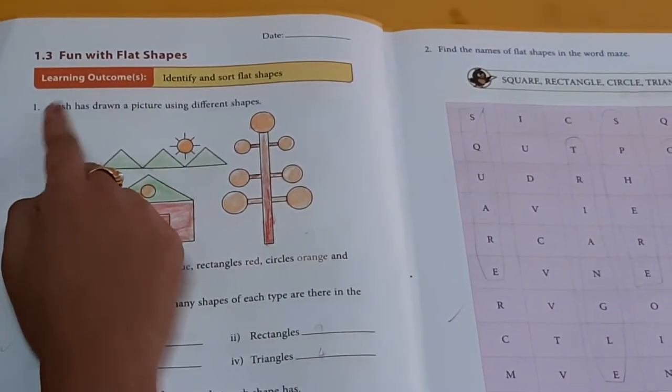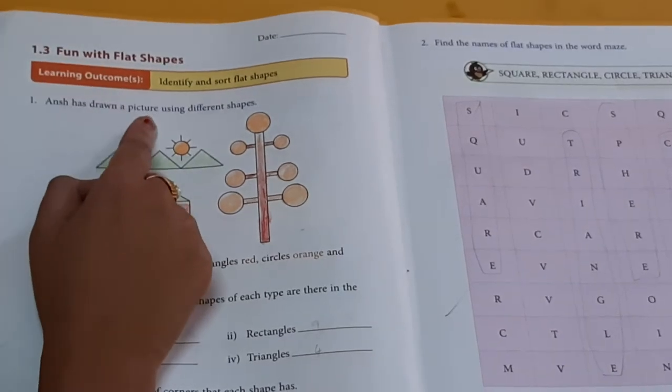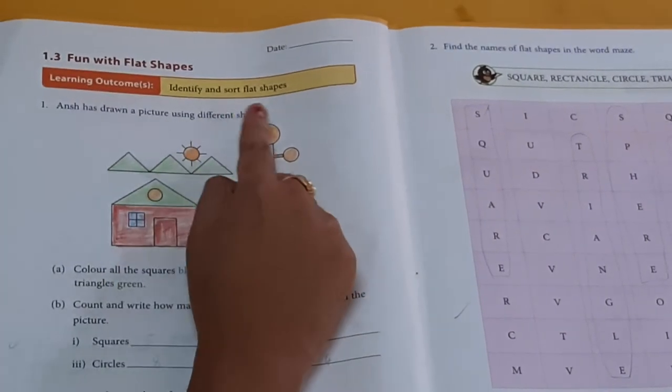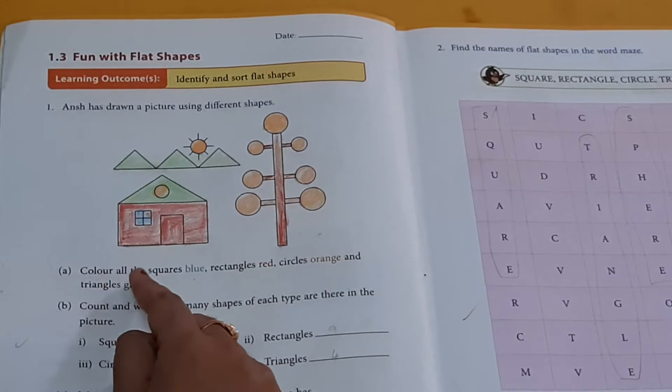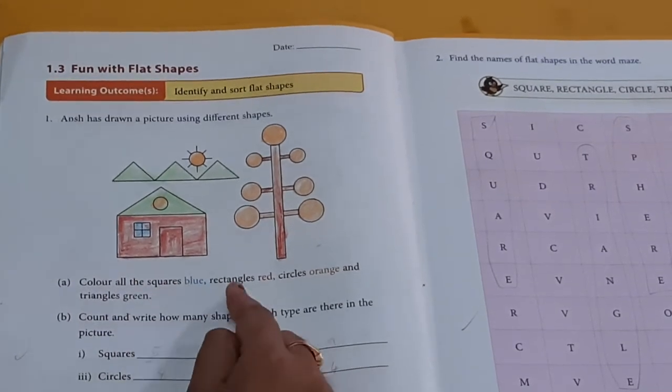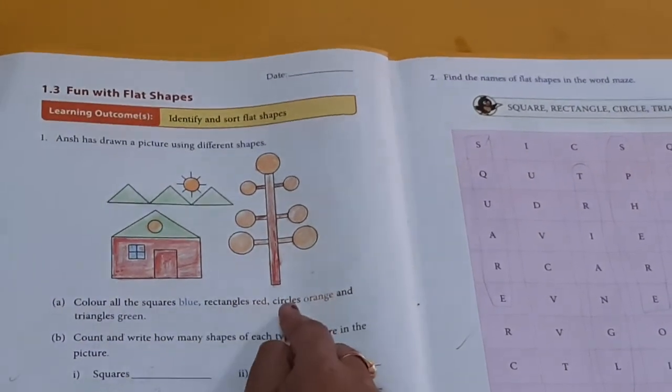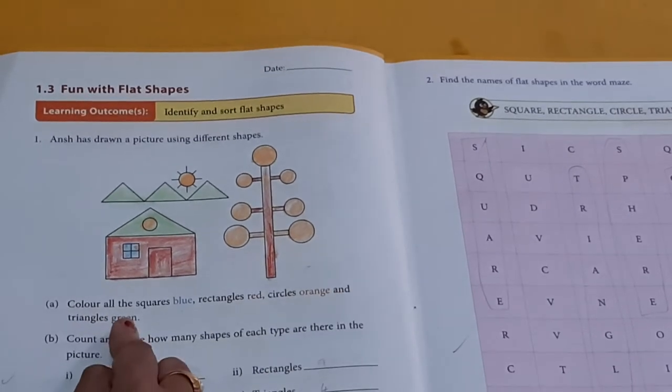One point three. Fun with flat shapes. First one. Ange has drawn a picture using different shapes. Color all the squares blue, rectangle red, circle orange and triangle green.